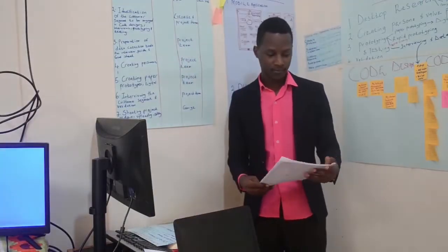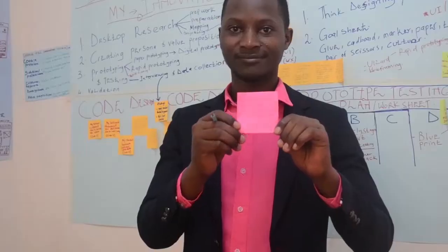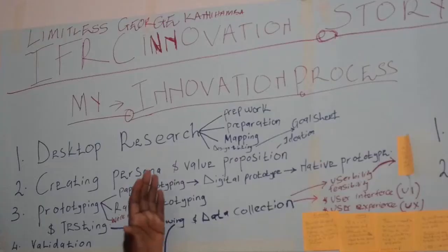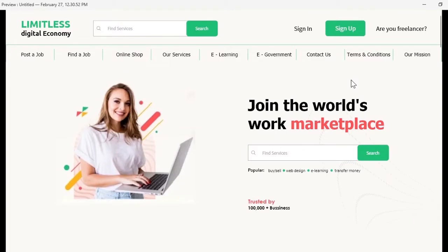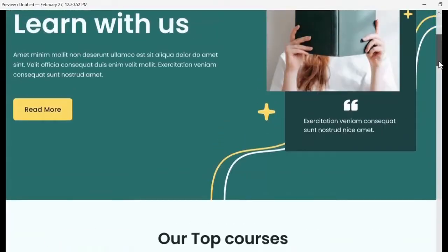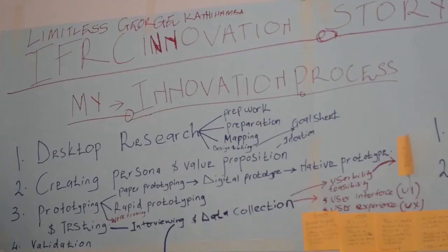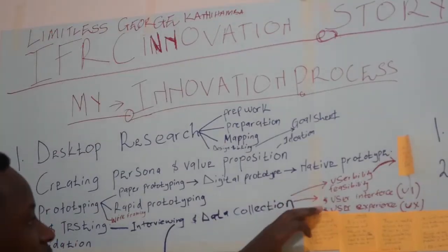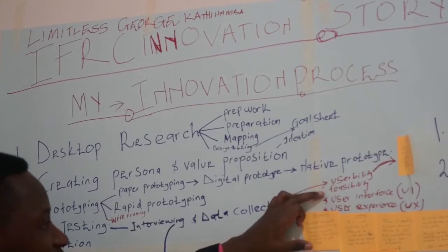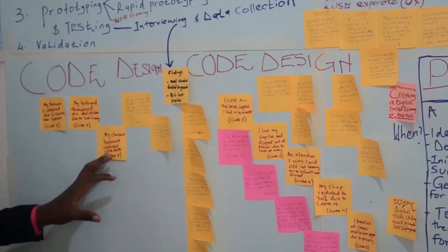From that stage, I proceeded to creating my persona and value proposition. I began with paper prototyping, then digital prototyping. From prototyping I proceeded to testing — interviewing and data collection — so that I could find out the usability, feasibility, UX and UI. After collecting my data, I had to do code design.